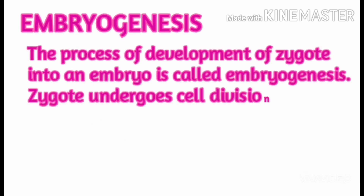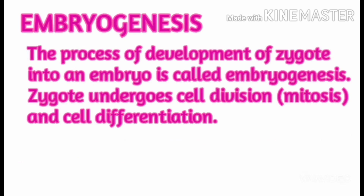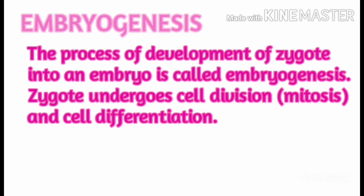The process of development of a zygote into an embryo is called embryogenesis. The zygote undergoes cell division by mitosis and cell differentiation.